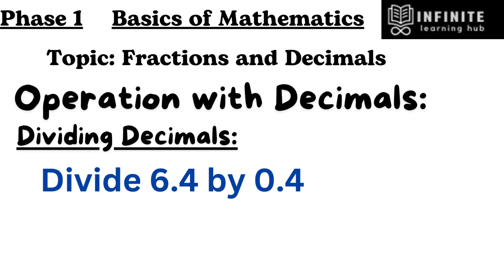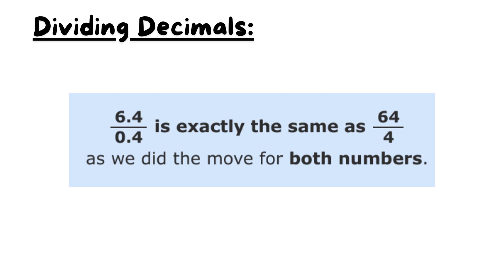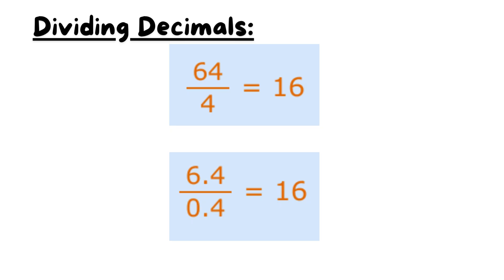Let's solve an example. Divide 6.4 by 0.4. First move one space for both. 6.4 by 0.4 is exactly the same as 64 by 4. As we did the move for both numbers, now we can calculate, so the answer is 16.